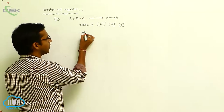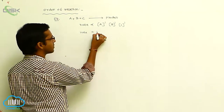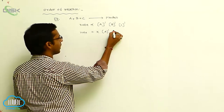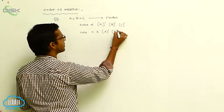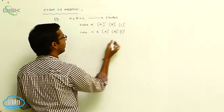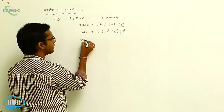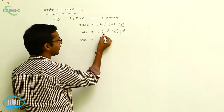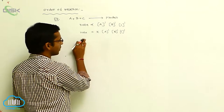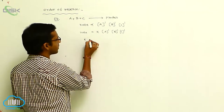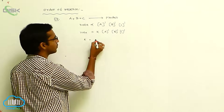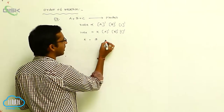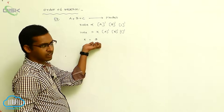So here, the rate, after removing the proportionality constant, we get K times concentration of A, B, and C. The rate of reaction depends on three concentration terms, so the order equals three. While order equals three, this is your third order reaction.